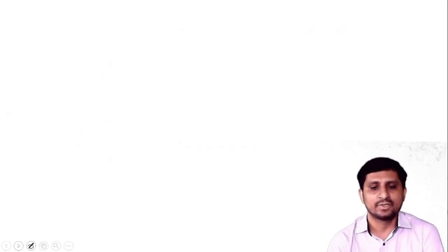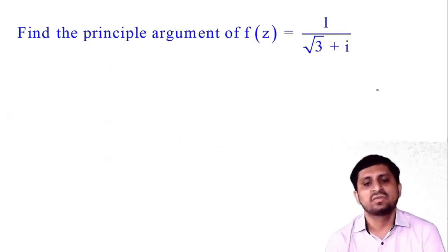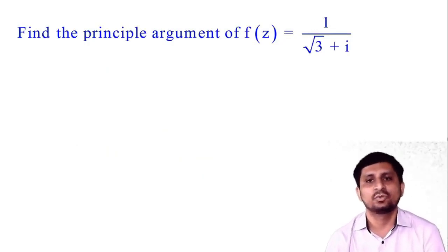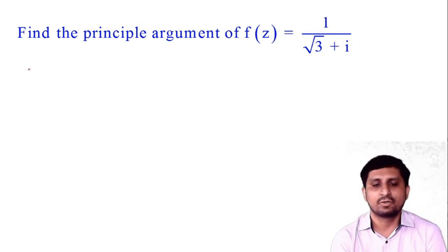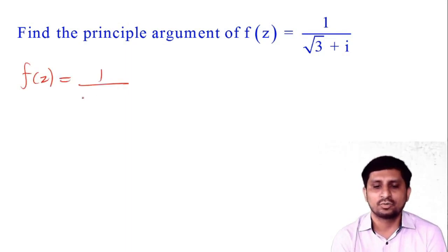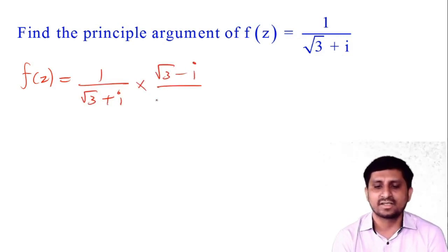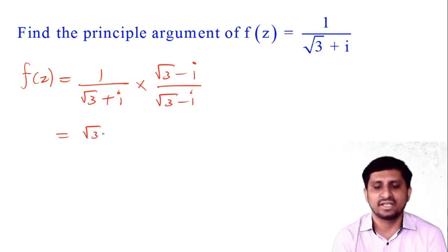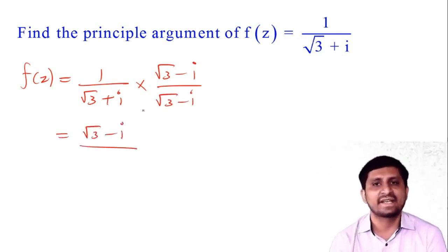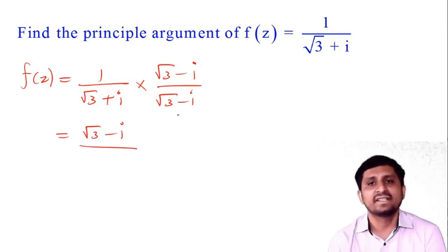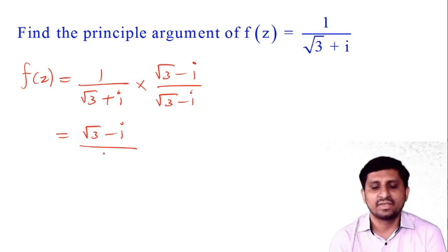Let us solve an example. Find the principal argument of z = 1/(√3 + i). First, convert to x + iy form by multiplying numerator and denominator by the conjugate (√3 − i). The numerator becomes √3 − i, and the denominator is (√3)² + 1² = 4. So z = √3/4 − i/4.